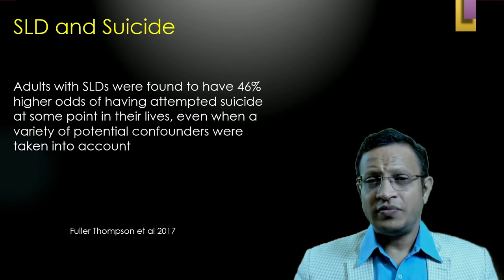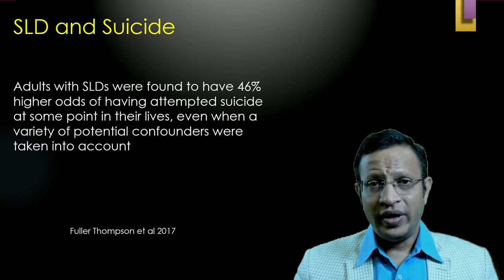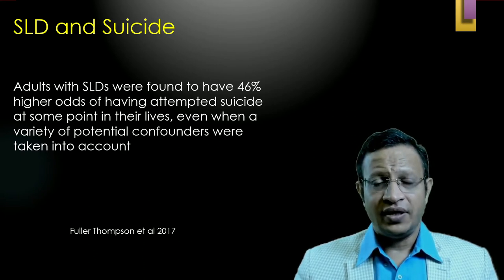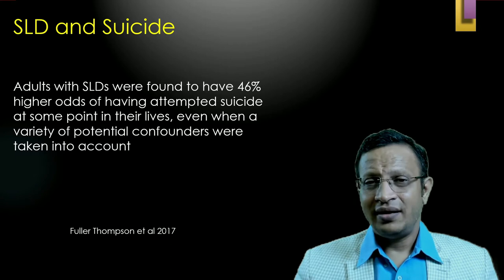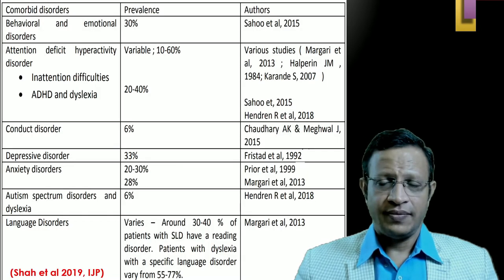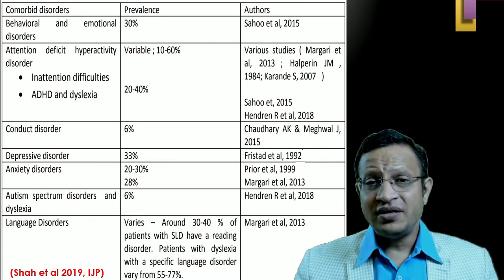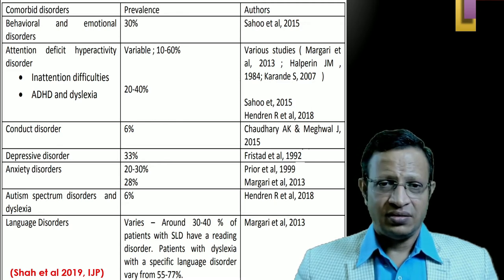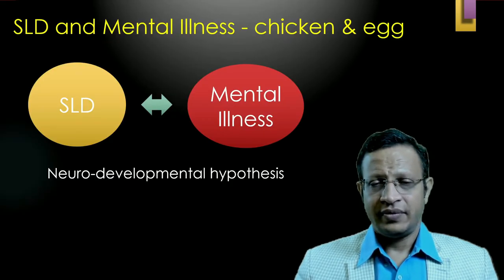Fuller Thompson published an important article in 2017 finding that adults with SLD had 46 percent higher odds of having attempted suicide at some point in their lives, even when various confounding factors were controlled. Various studies have clearly said that the prevalence of comorbid conditions varies from 30 to 60 percent, meaning comorbidity is the rule.